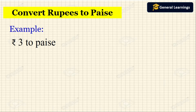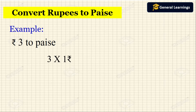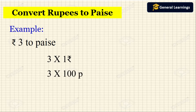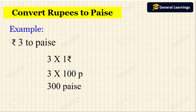Now we will see some examples. Here they have given: convert rupees 3 to paise. This can be written as 3 into 1 rupee. We know that 1 rupee equals 100 paise, so that can be written as 3 into 100. We get 300 paise.